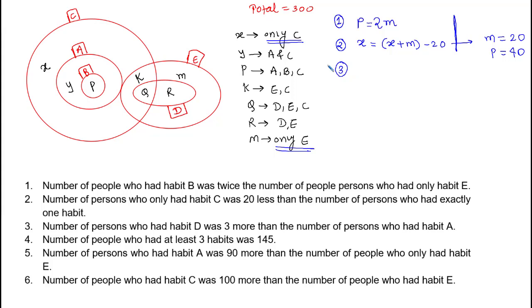Statement 3: the number of persons who had habit D — which is q + r — equals three more than the number having habit A, which is y + p. So q + r = y + p + 3. Statement 4: the number of people who had at least three habits is 145. That means p + q = 145.